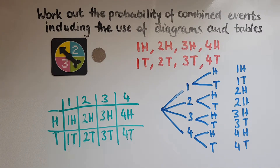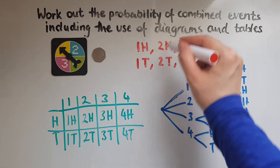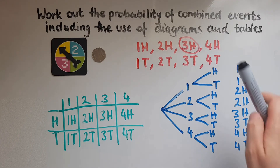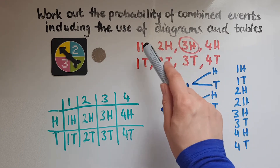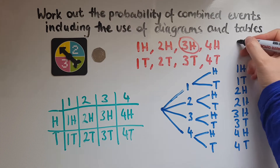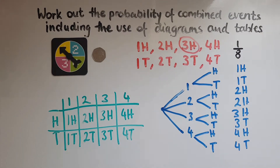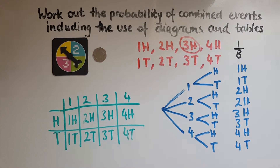Through the tree diagram it's very easy to work out the probability of combined events. If I want to find the probability of getting three and heads, I can look at the diagram and see there is only one outcome like that. So that would be one out of eight. The probability of getting three and heads is one eighth.